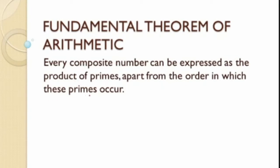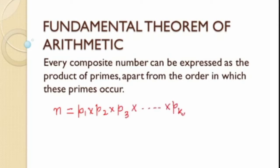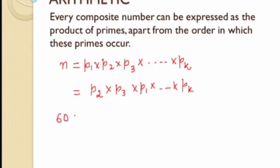Apart from the order in which the primes occur, for any composite number N, you can always write it as the product of primes p1, p2, ... pk, and this representation is unique up to ordering. That means for you it might be p1 × p2 × p3, and for me I might write it as p2 × p3 × p1 — the primes are the same, just reordered.